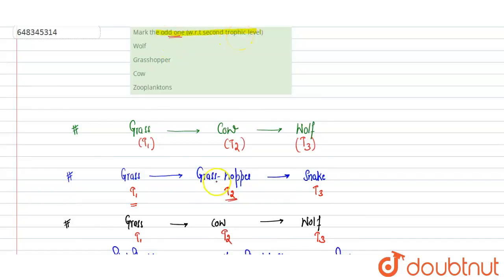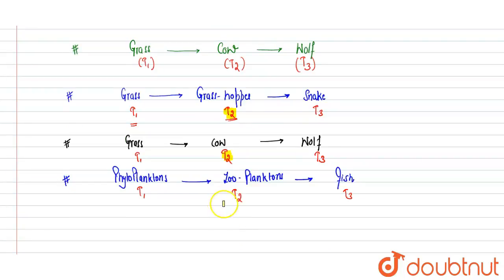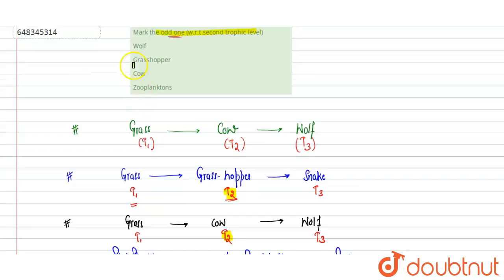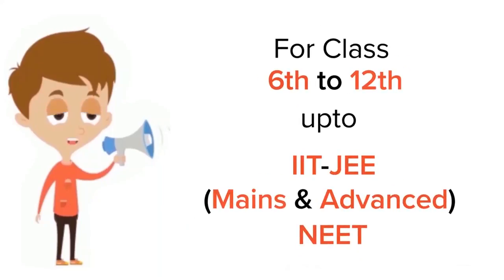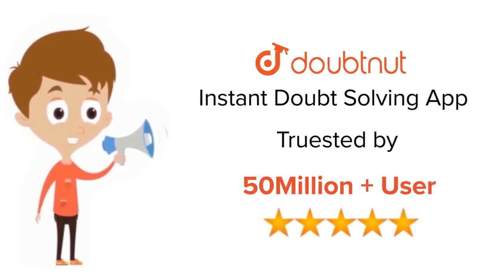So to conclude: grasshopper is at the second trophic level, cow is at the second trophic level, and zooplankton is at the second trophic level. However, wolf exhibits the third trophic level, so wolf is odd among the rest. Option A, wolf, is correct — the rest are incorrect. Hope you got it. Thank you. For class six to twelfth, JEE and NEET level, trusted by more than five crore students — download the DoubtNet app.